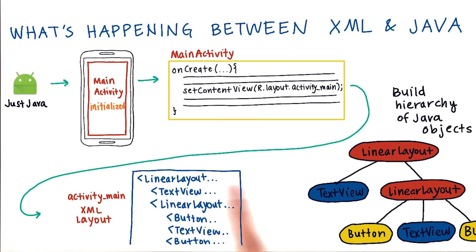For each view, it inflates or creates a Java object for it. It goes through the XML file and then builds up this whole hierarchy of Java objects. When it's inflating each of these views, it's actually calling the constructor, new text view or new linear layout, and then it's passing in all these attributes into the Java object so that it can be set up properly.